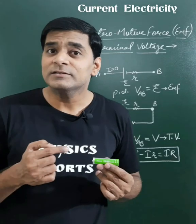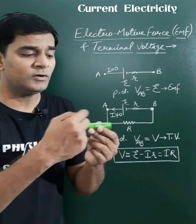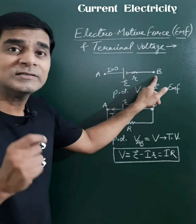When a cell is not connected with any external resistance or in any circuit, no current will flow through the cell. In that condition, if we measure the potential difference across its end terminals, that potential difference is called the EMF of that cell.